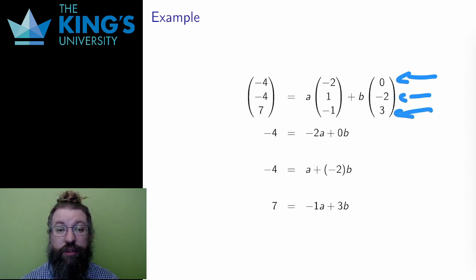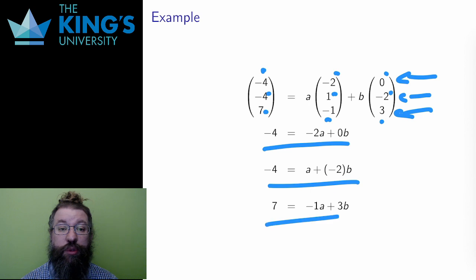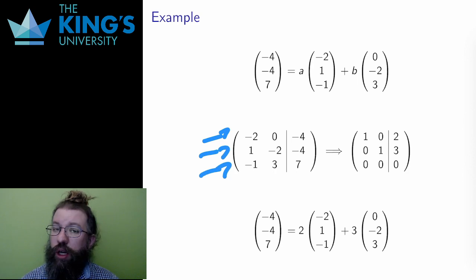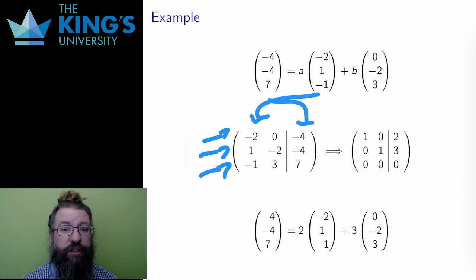In the first component, -4 equals -2A plus 0B. In the second component, -4 equals A minus 2B. And in the third component, 7 equals -A plus 3B. And this is now a system of three equations. Now I have written the matrix of this system. Notice its columns. The constant column is the vector I want to describe, and the other columns are the basis vectors I am using. I can build this matrix directly from the vectors if I want.